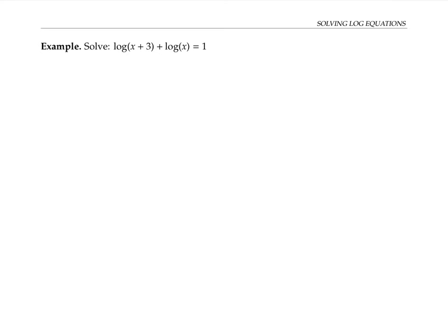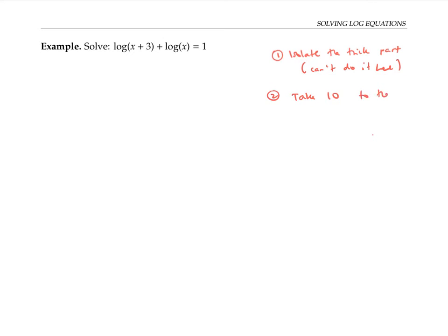The second equation is a little bit trickier because there's a log in two places. Notice that this is a log where there's no base written, so a base 10 is implied. So I'm already thinking: in order to undo a log base 10, I'm going to want to take 10 to the power of both sides. Of course, it's still a good idea to isolate the tricky part, but there's nothing really to isolate here. So we'll just jump straight to step two and take 10 to the power of both sides.